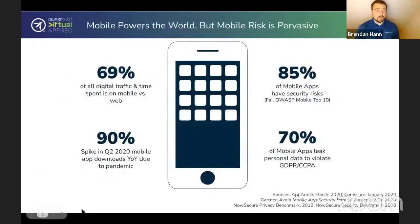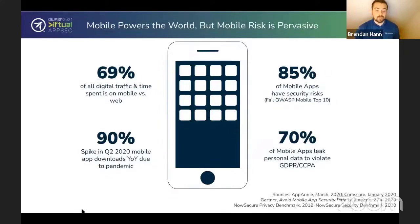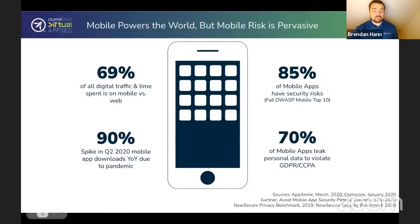Mobile apps present unique challenges, and there are some really scary statistics. Even though mobile now accounts for almost 70% of web traffic, and there was a 90% spike in mobile app downloads due to the pandemic, 85% of mobile apps failed to pass the OWASP Mobile Top 10, and 70% of mobile apps leak personally identifiable information that could violate GDPR or CCPA.